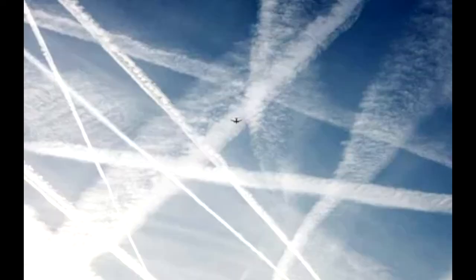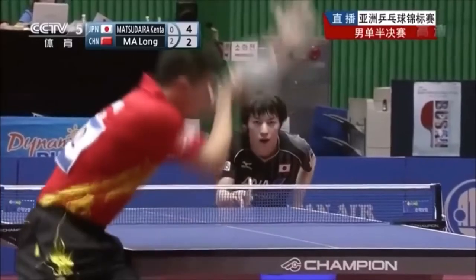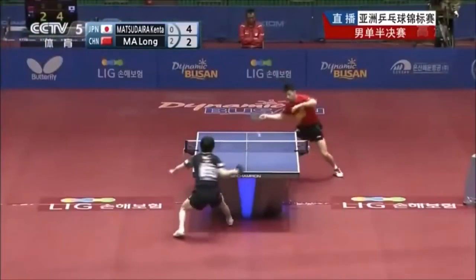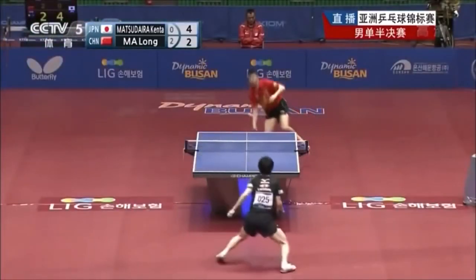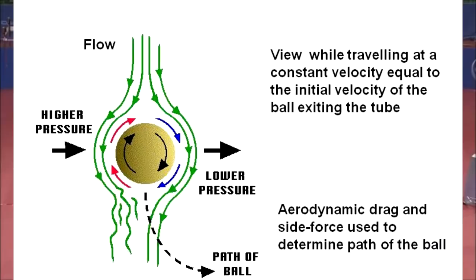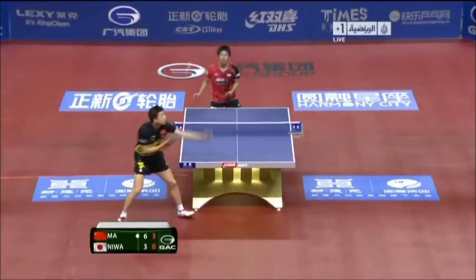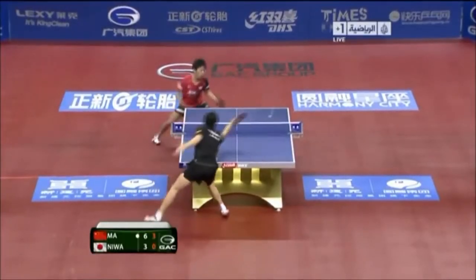When a ball travels without spin, the air moves over the top and bottom of the ball at the same speed, meaning the pressure is balanced. However, when a ping pong ball spins as it travels through the air, these pressure forces become imbalanced, enabling the player to control the ball's movement from side to side or up and down. Ping pong players use these imbalanced forces to control a ball's path.